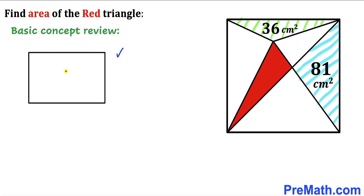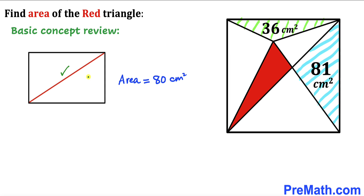Let's focus on this rectangle and assume that the area of this rectangle is 80 centimeters square. Here's our diagonal for this rectangle. This diagonal is going to divide the area of the rectangle into two equal parts, so the area of each triangle is going to be 40 centimeters square.